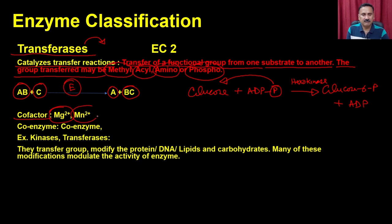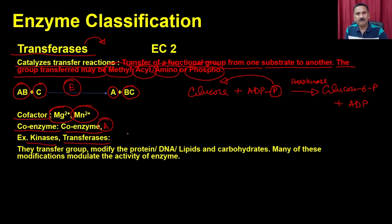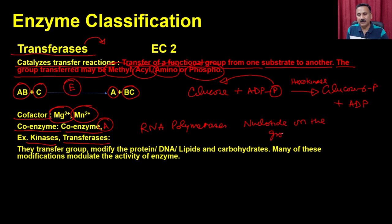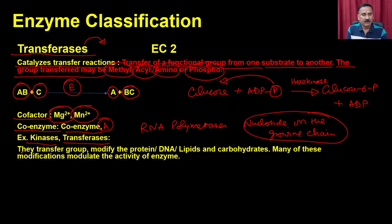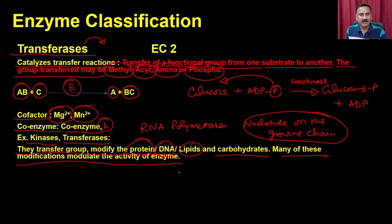Cofactors for transferases include magnesium and manganese. In some cases a coenzyme is used — for example, coenzyme A participates in acyl transferases. Examples of transferases include kinases, and some RNA polymerases, because RNA polymerase transfers nucleotides onto the growing RNA chain. Transferases thus belong to this group, transferring groups mostly onto proteins, DNA, lipids, and carbohydrates.